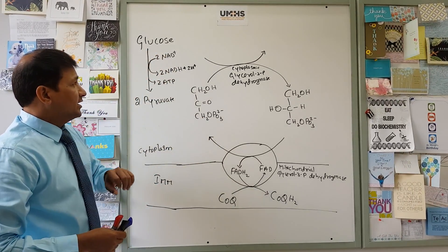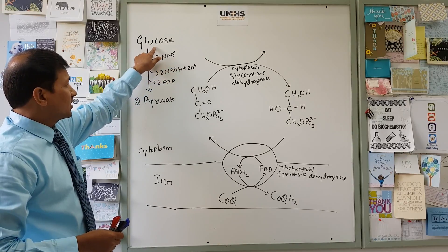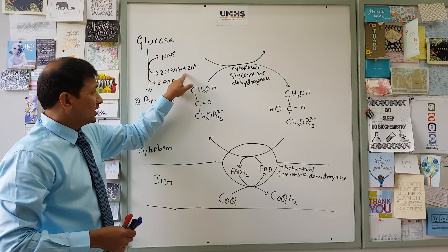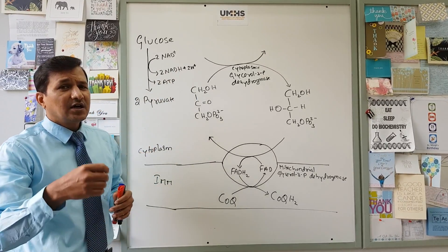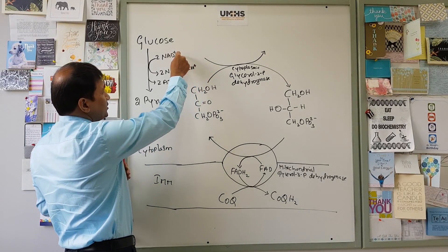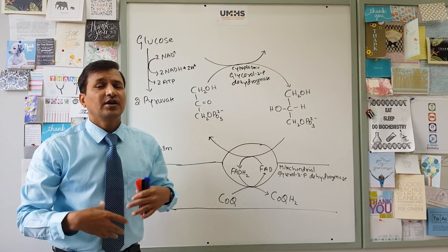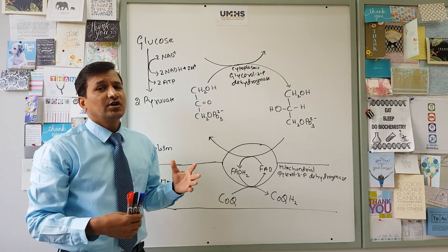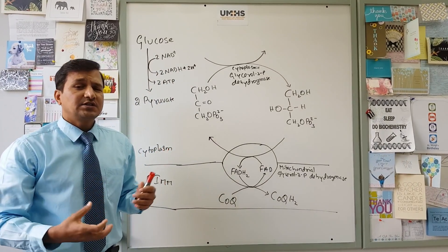The point here is that 2 NAD+ are required for converting glucose into 2 pyruvate molecules, which are eventually converted into 2 NADH + 2 H+. Unless the cytoplasm converts this 2 NADH + 2 H+ back into 2 NAD+, you cannot continue glycolysis, because eventually there will be a shortage of NAD+ molecules.